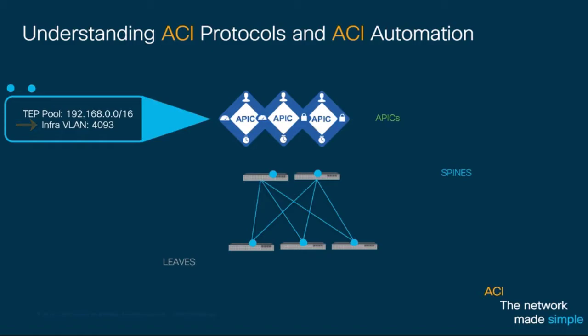This VLAN may be used outside your ACI fabric in specific use cases such as Virtual APIC, ABE, and others, so try to reserve it for ACI only and try to avoid using System Reserved VLANs from your switches in your network.